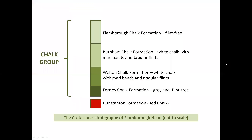In the first part of the tour we examined sections at Speeton and at Bempton, which are in cliffs higher than those visited in this part. At Speeton we saw the Lower Cretaceous Hunstanton formation which underlies the Upper Cretaceous chalk group. The whole of the Ferriby formation could be seen in the cliff section together with the basal beds of the overlying Welton formation. In Bempton cliffs we recognised lines of tabular flints that characterise chalk of the Burnham formation, and we experienced the first of two examples of intense deformation of the chalk caused by reactivation of the fault system centred on the Howardian Hills. Because of the difference in height of the shore at Speeton and the clifftop at Bempton, we did not see the intervening sequence of the Welton formation. This will be addressed in this part of the tour.